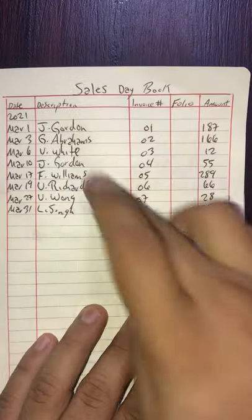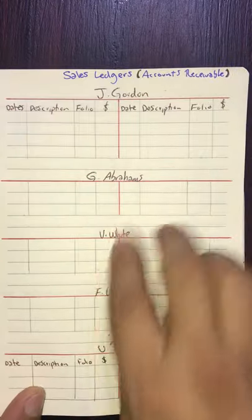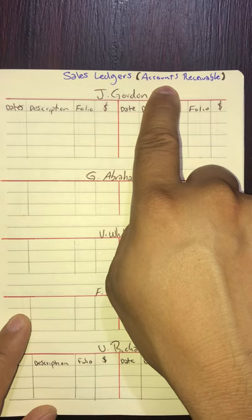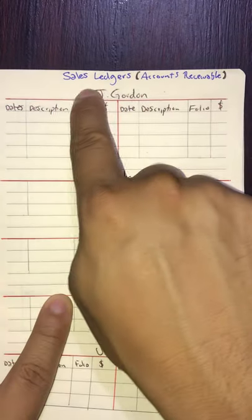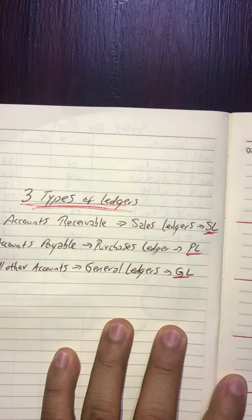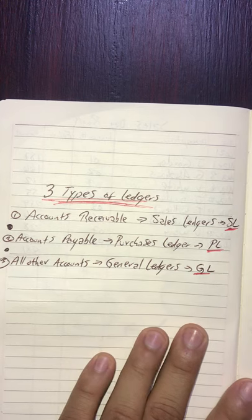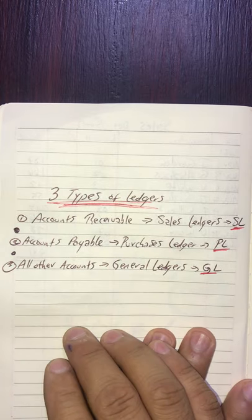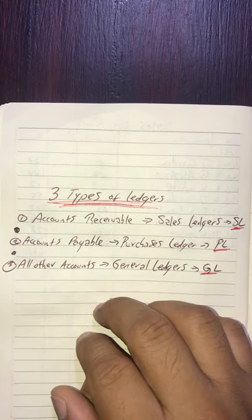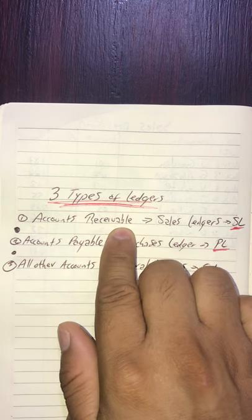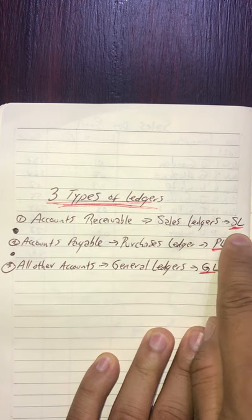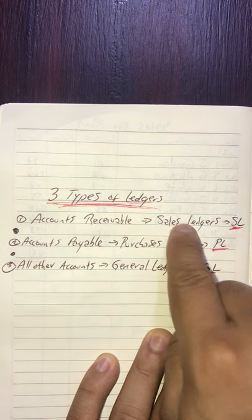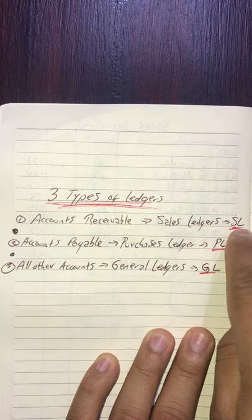I've opened a T-account for all of these, which you'll notice are the same names as in the sales ledgers — these are all accounts receivable. From this point on, there are three types of ledgers. The first: all your accounts receivable will be referred to as sales ledgers, abbreviated as SL. Keep that in mind.